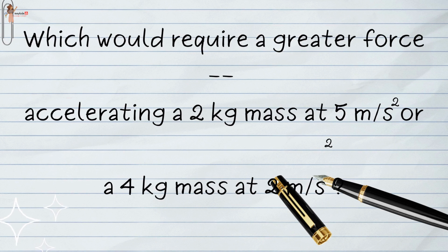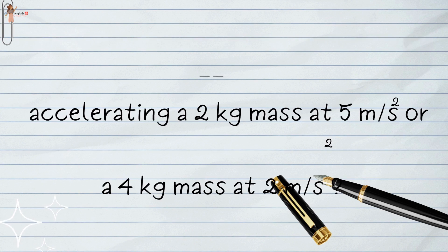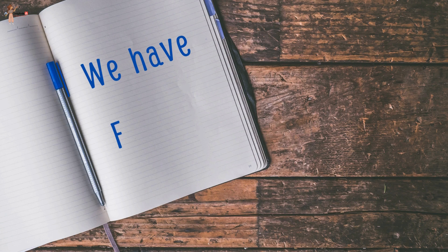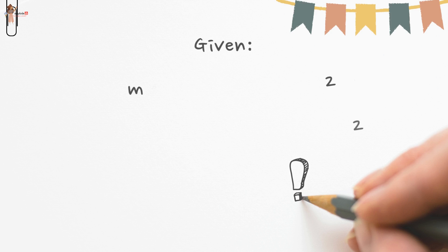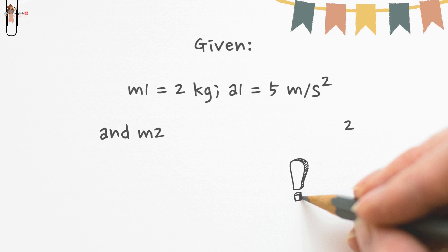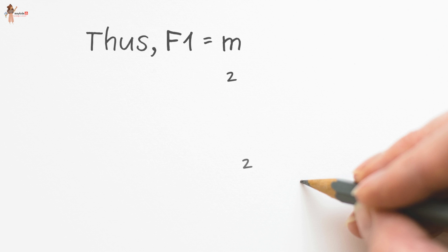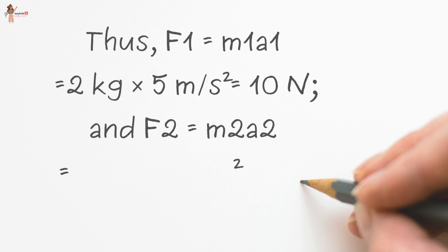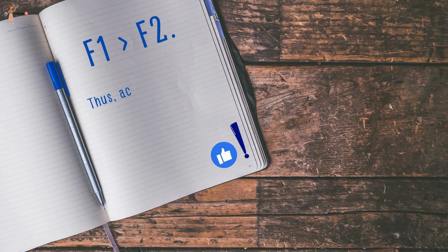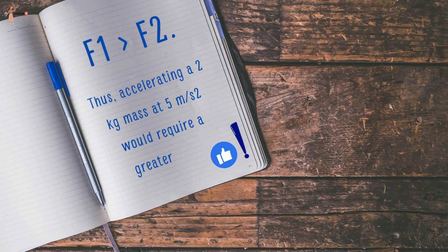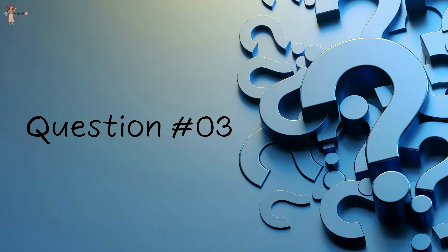Which requires greater force: accelerating a 2 kg mass at 5 m/s², or a 4 kg mass at 2 m/s²? Using F = ma: F₁ = 2 × 5 = 10 N and F₂ = 4 × 2 = 8 N. Since F₁ > F₂, accelerating a 2 kg mass at 5 m/s² requires greater force.